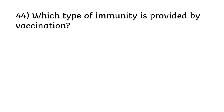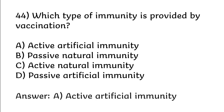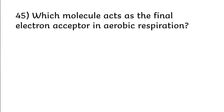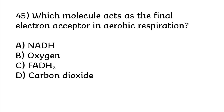Which type of immunity is provided by vaccination? Options: active artificial immunity, passive natural immunity, active natural immunity, passive artificial immunity. Correct answer is option A: active artificial immunity. Which molecule acts as the final electron acceptor in aerobic respiration? Options: oxygen, NADH, FADH2, carbon dioxide. Correct answer is option B: oxygen.